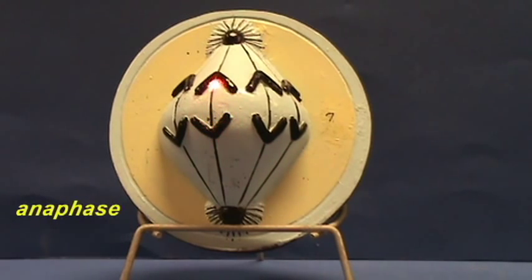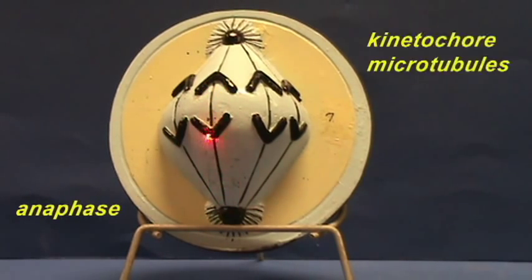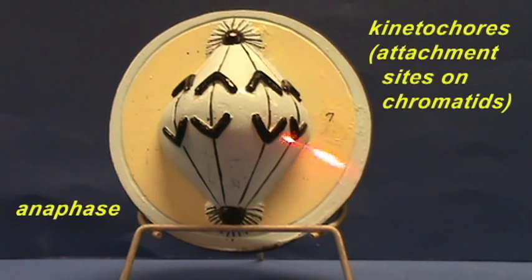It's characterized by the actual separation of the chromatids from one another. They're being pulled by these kinetochore microtubules, which attach to the kinetochores.